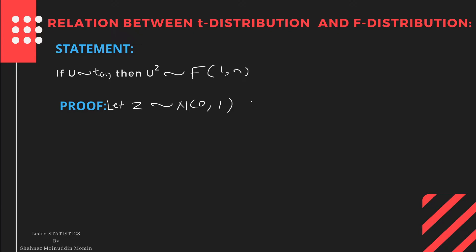And X is a random variate which follows a chi-square distribution with n degrees of freedom. Then, by definition of T-distribution, here we consider T-distribution is abbreviated by U. U is equal to Z divided by the square root of X upon n.